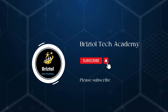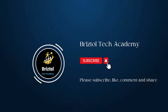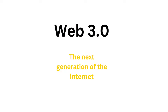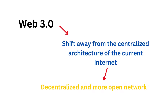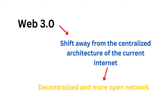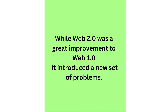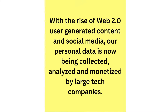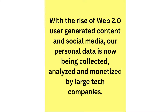Next, we are going to talk about Web 3.0. Web 3.0, the next generation of the internet, is here and it's set to revolutionize the way we interact with the web. Web 3.0 represents a shift away from the centralized architecture of the current internet, towards a decentralized and more open network. While Web 2.0 was a great improvement to Web 1.0, it introduced a new set of problems. With the rise of Web 2.0, user-generated content and social media, our personal data is now being collected, analyzed, and monetized by large tech companies.